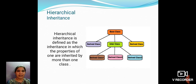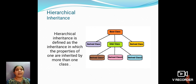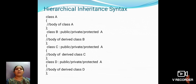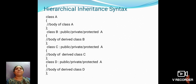Hierarchical inheritance is defined as an inheritance in which the properties of one class are inherited by more than one derived class. In the general syntax, class A is the base class which has three derived classes, namely B, C, and D.